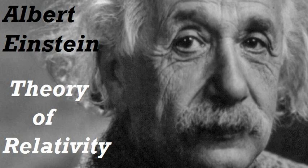Finally, the general principle of relativity permits us to determine the influence of the gravitational field on the course of all those processes which take place according to known laws when a gravitational field is absent, i.e., which have already been fitted into the frame of the special theory of relativity. In this connection, we proceed in principle according to the method which has already been explained for measuring rods, clocks, and freely moving material points. The theory of gravitation derived in this way from the general postulate of relativity excels not only in its beauty, nor in removing the defect attaching to classical mechanics which was brought to light in Section 21, nor in interpreting the empirical law of the equality of inertial and gravitational mass, but it has also already explained a result of observation in astronomy against which classical mechanics is powerless.